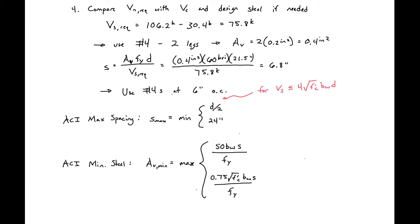Next we need to check our ACI maximum spacing and minimum steel requirements. For cases where V_s is less than or equal to 4√f'c × b_w × d, which is the case in most instances, the maximum spacing is the lesser of d/2 and 24 inches. Our d/2 is 10.75 inches, which is the minimum of these two. So our S_max is 10.75 inches, which is greater than our 6 inches on center — we meet the ACI maximum spacing requirement.